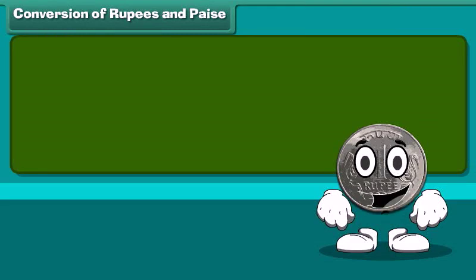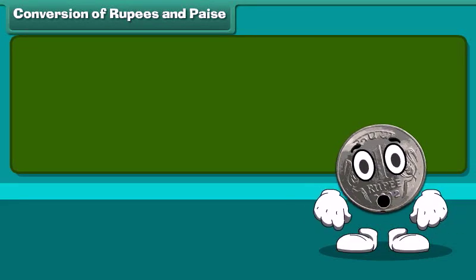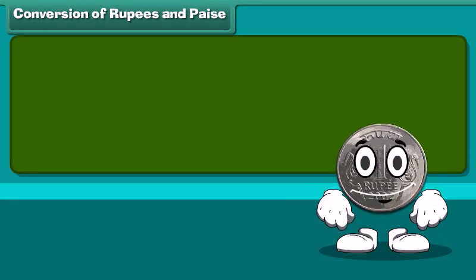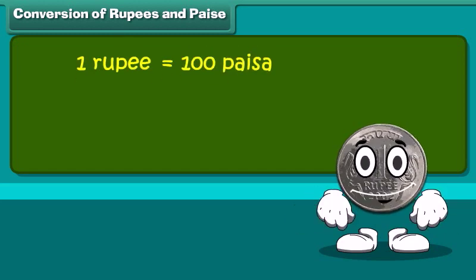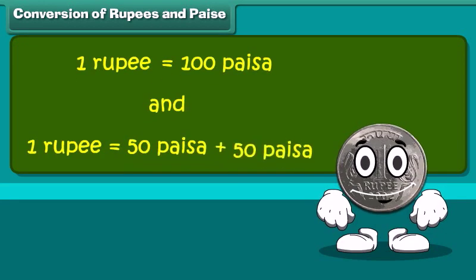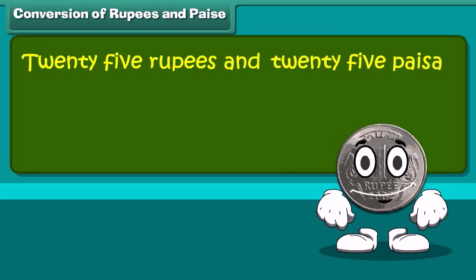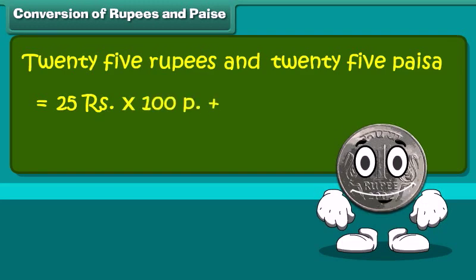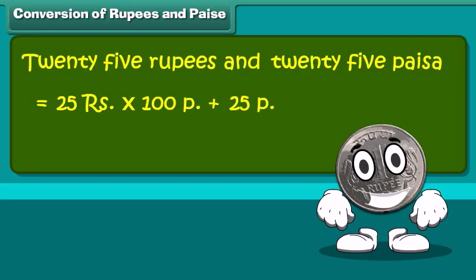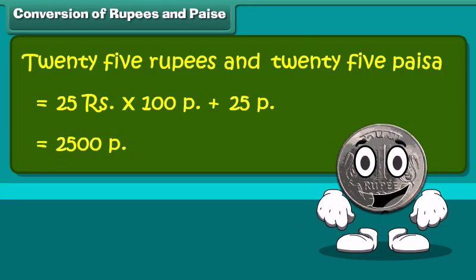We start with conversion of rupee to paisa and vice versa. 1 rupee is equal to 100 paisa. 20 rupees and 25 paisa is equal to 20 multiplied by 100 plus 25 paisa. This becomes 2500 plus 25 paisa.